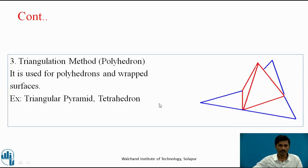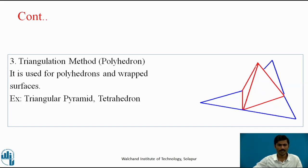The third method is the triangulation method. It is used for polyhedrons and wrapped surfaces — for example, triangular pyramids and tetrahedrons. This method is used for objects which have triangular surfaces.